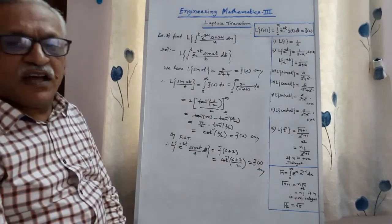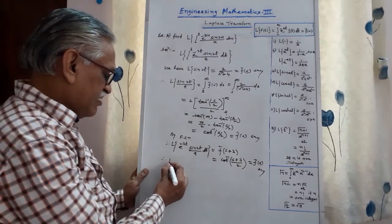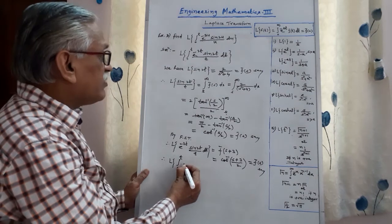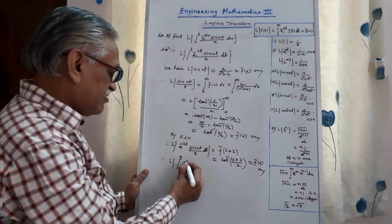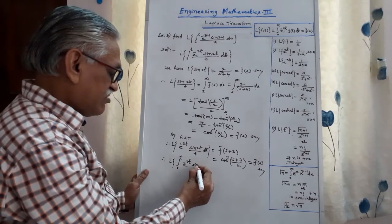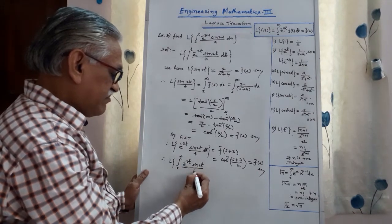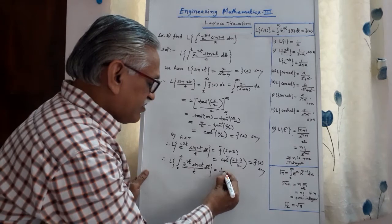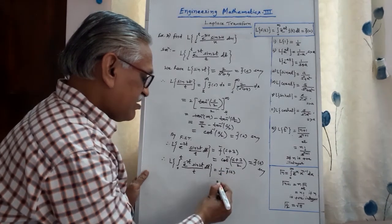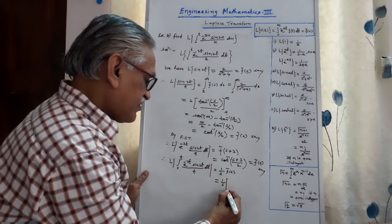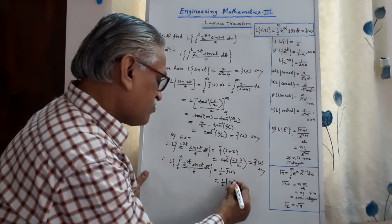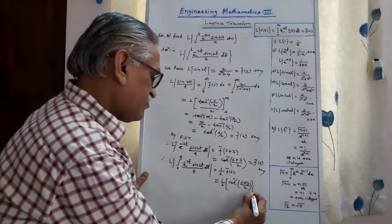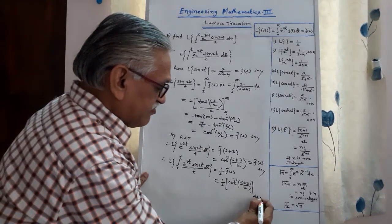Every time I am calling it the new f̄(s). Finally, the Laplace transform of the integral from 0 to t of e^(−3t)·sin(2t)/t dt, as per the Laplace of integral theorem, is (1/s)·f̄(s). Therefore the answer is (1/s)·cot⁻¹((s + 3)/2). This is the required answer.